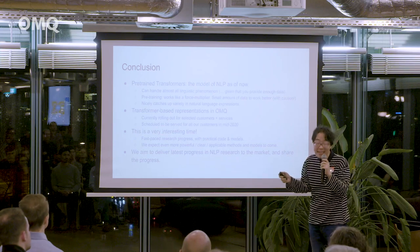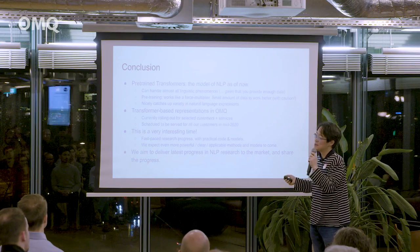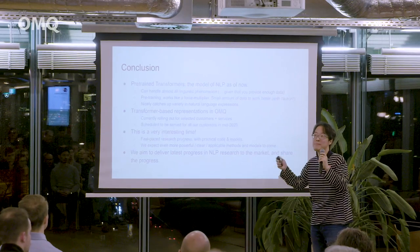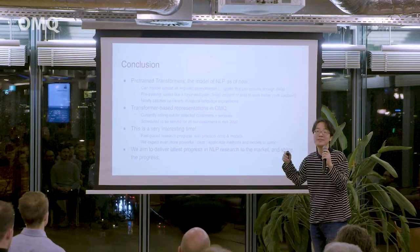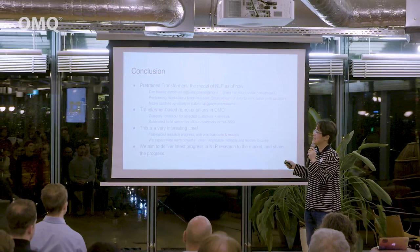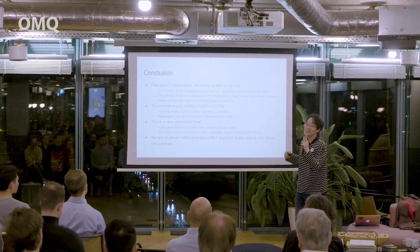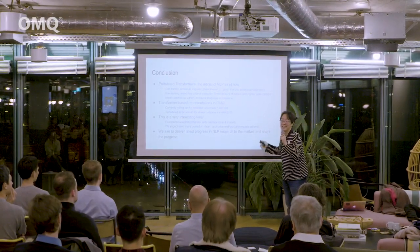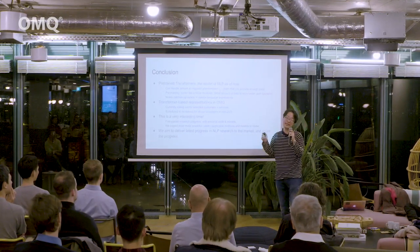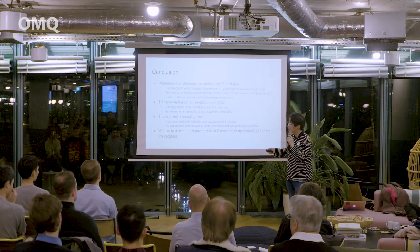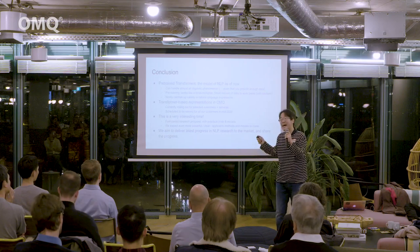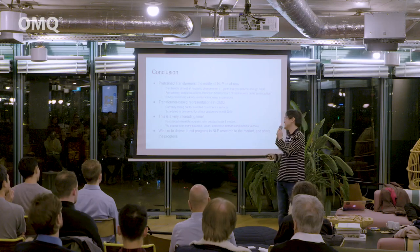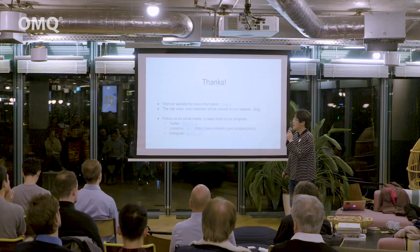This is a very interesting time to be active in a small tech startup. I wrote my first distributional semantics paper in 2007 — the practical changes in the last three years at the system level are greater than in the 10 years before that. This is very fast-paced research progress with practical code and models. Even back in my postdoc days from 2012 to 2014, sharing code and models was not standard — but it is now. We expect even more powerful and clearly applicable methods and models to come. We aim to deliver the latest progress in natural language understanding research to the market with our product. Thank you.